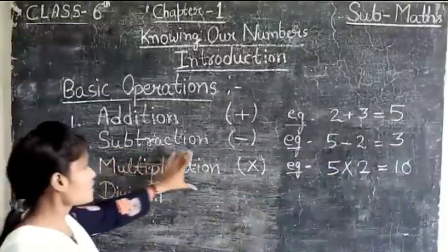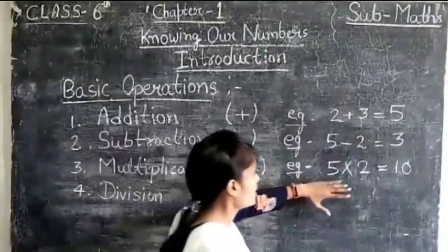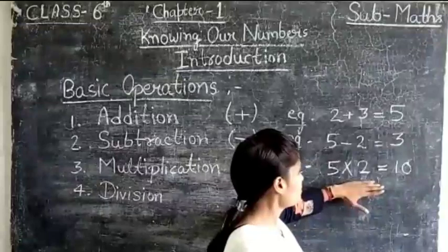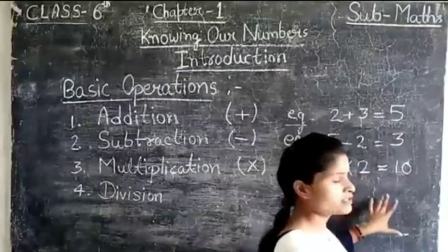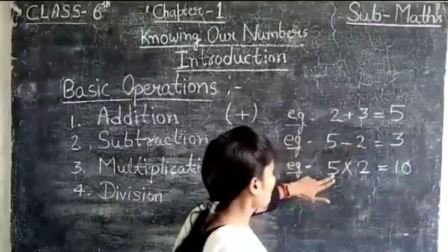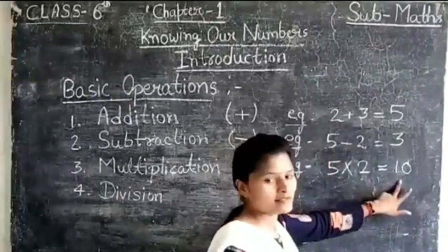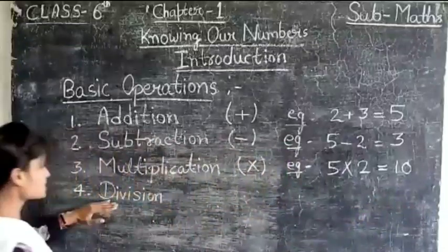So in multiplication, just two digits multiplying with each other, then we get the other digits. Here, 5 multiplied by 2, we get 10. Now next is division.